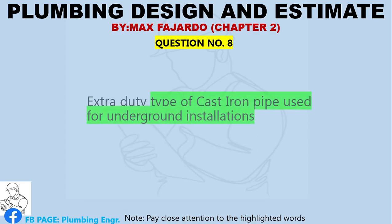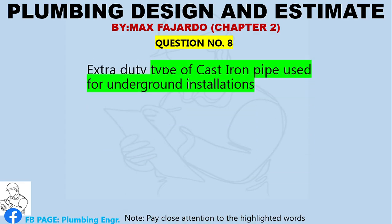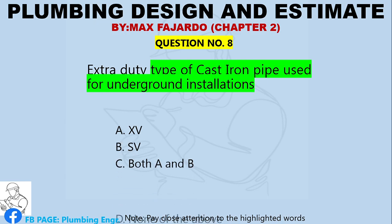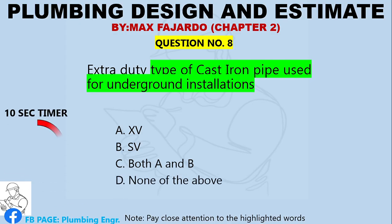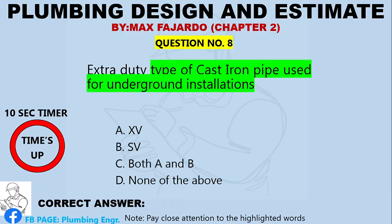Question Number 8. Extra duty type of cast iron pipe used for underground installations. A. XV. B. SV. C. Both A and B. D. None of the above. Correct answer: Letter A, XV.